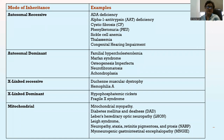Examples of modes of inheritance include: autosomal recessive — ADA deficiency, alpha-1 antitrypsin deficiency, cystic fibrosis, phenylketonuria, sickle cell anemia, thalassemia, congenital hearing impairment; autosomal dominant — familial hypercholesterolemia, Marfan syndrome, osteogenesis imperfecta, neurofibromatosis, achondroplasia; X-linked recessive — Duchenne muscular dystrophy, hemophilia A; X-linked dominant — hypophosphatemic rickets; and mitochondrial — mitochondrial myopathy, diabetes mellitus, Leber's Hereditary Optic Neuropathy, Leigh syndrome, neuropathic ataxia, retinitis pigmentosa, ptosis, and mitochondrial neurogastrointestinal encephalopathy, MNGIE.